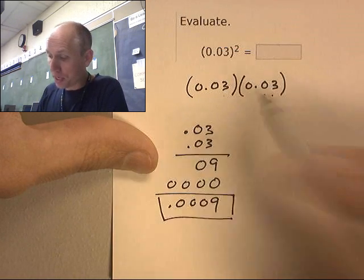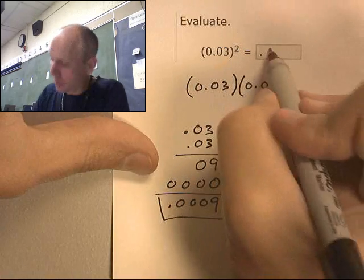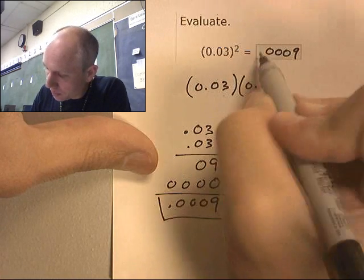Or I could have just done, ready? Three times three and give it four decimal places. Point zero, zero, zero.